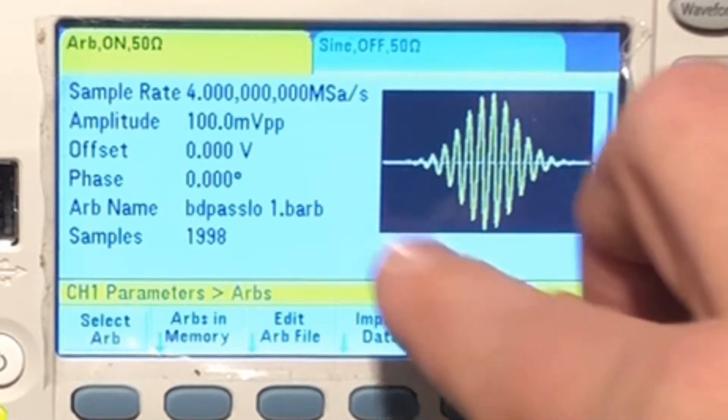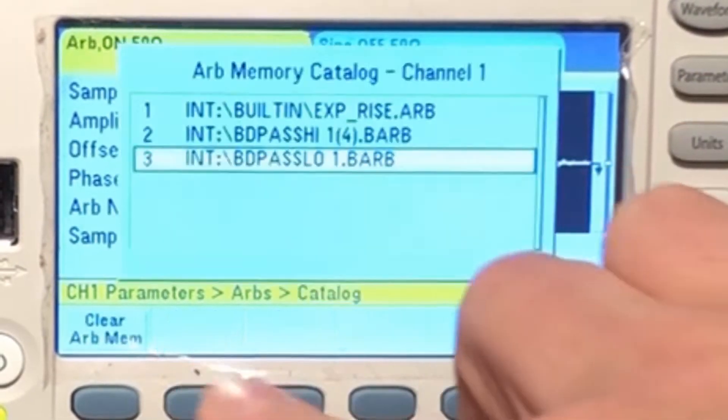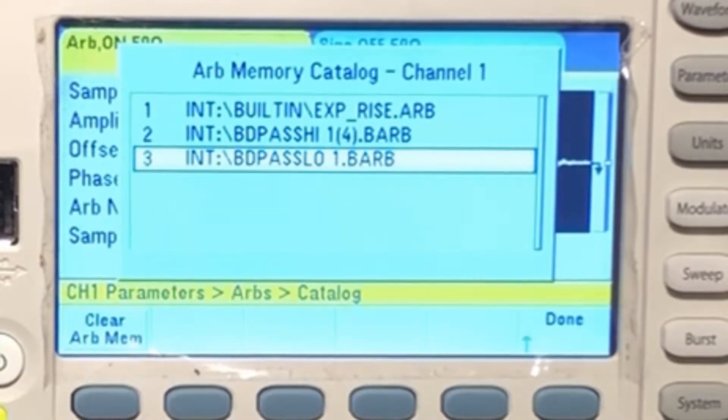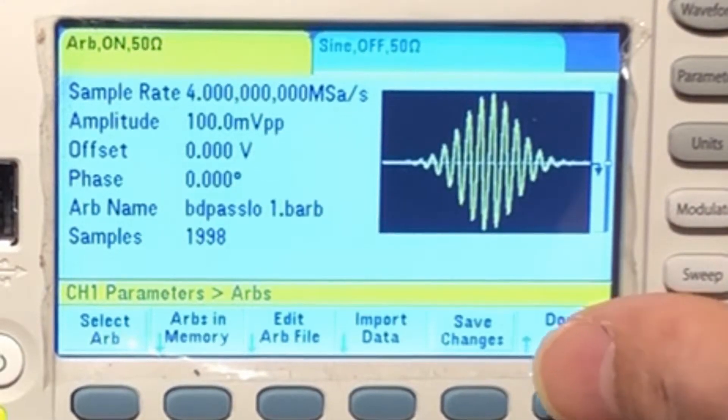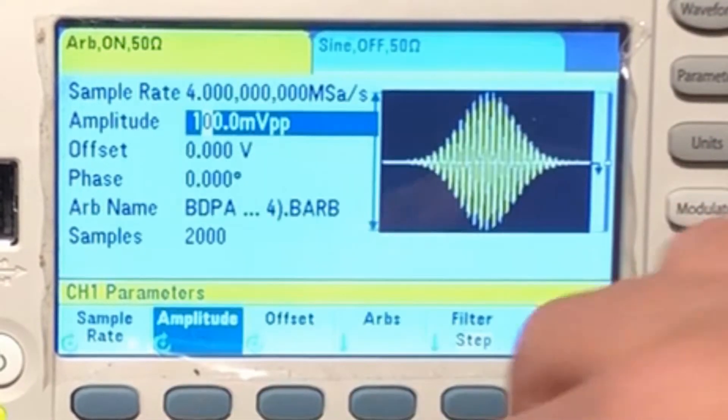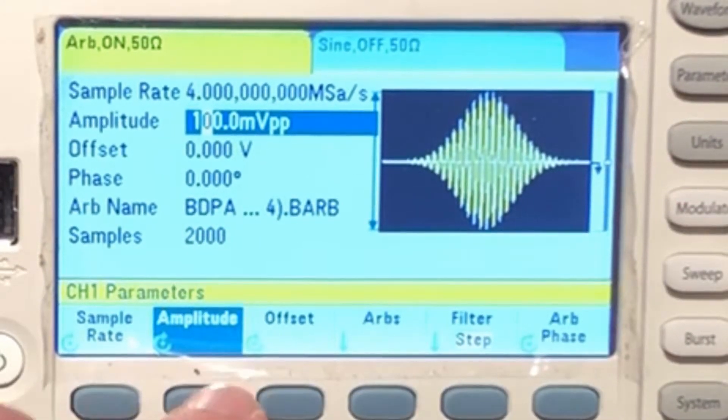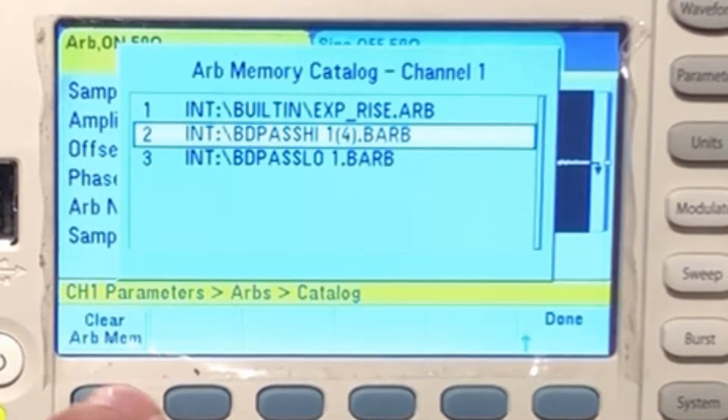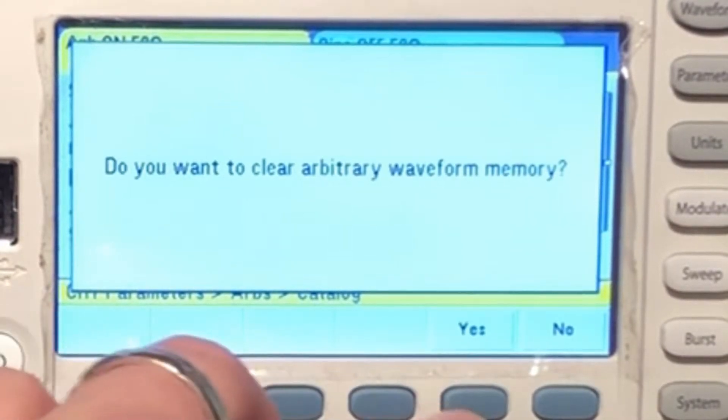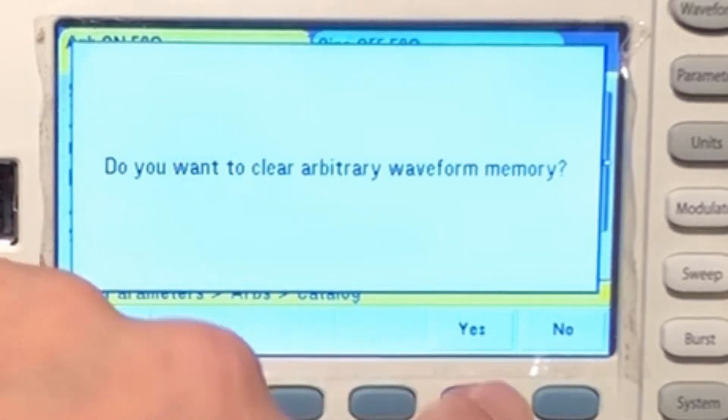And we're now... oh, we didn't do the band pass, I didn't do that correctly. Let's go select arb, okay cancel. Let's go to arbs and memory. Oh yeah, I guess I did go to band pass low when I go done. And now I'm at the 100 millivolts. Arbs and memory, I can go back to the other one. Select arb and now it's the other one. Now you can also go in, if you saw arbs and memory, clear the arb memory. So you want to clear the... so this isn't removing them from the system but it is removing the settings like the amplitude setting. So that's something to be conscious of.